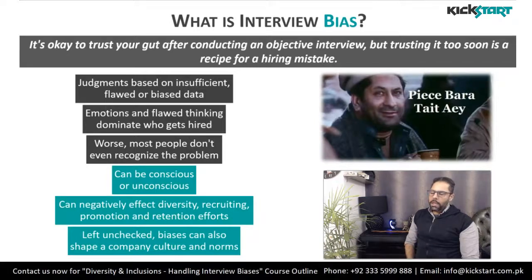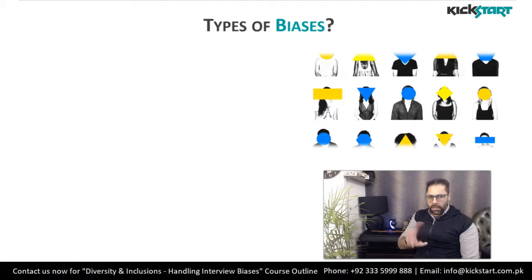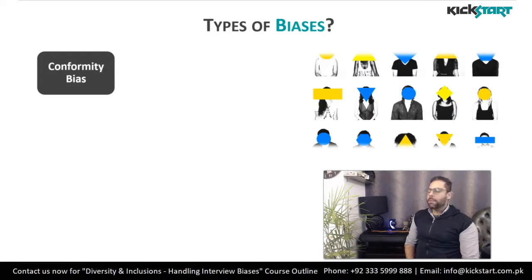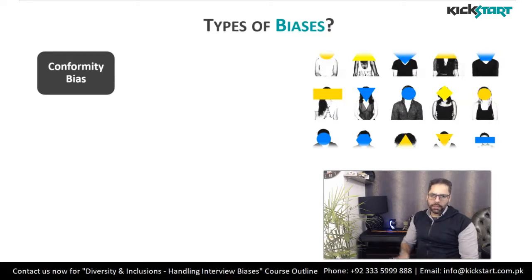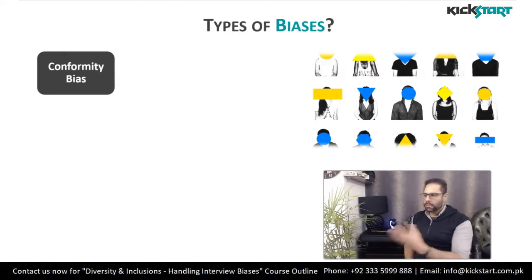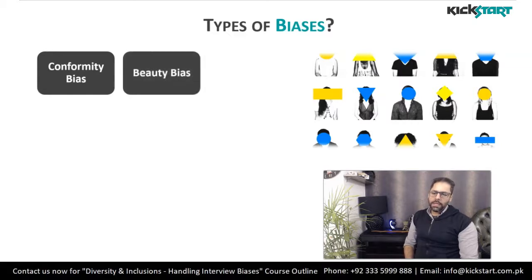Now we'll talk about certain types of biases so you can relate to them and see whether or not you are applying them in the interview process. The first one is the conformity bias. This happens when, for example, three or four individuals are responsible for approving a candidate and three of them say yes, but you personally don't feel that person is the right fit. Just because the others agreed, you go along and say you agree too — just to avoid the hassle of interviewing more candidates.